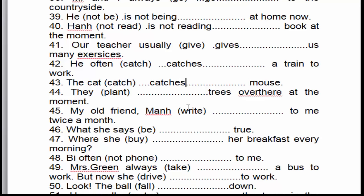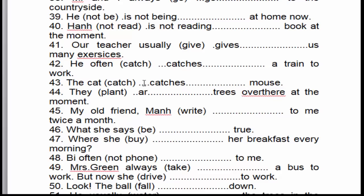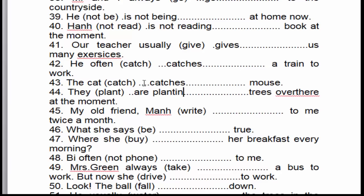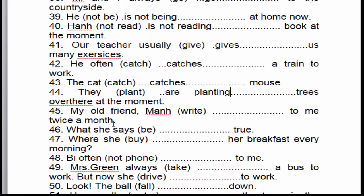Câu số 44: 'They are planting trees here at the moment.' Họ trồng cây ở đây vào lúc này. 'At the moment' — diễn tả thì hiện tại tiếp diễn. 'They' là số nhiều, cho nên chúng ta sử dụng to be là 'are', cộng động từ thêm '-ing' → 'are planting'.